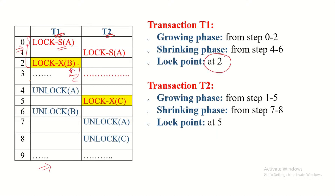After the lock point, T1 moves from the growing phase into the shrinking phase, which runs from step three to step six. Coming to transaction T2, it is in the growing phase up to step five. The last lock acquired at step five is the lock point for T2, and from that point onwards it transitions into the shrinking phase, releasing its locks.